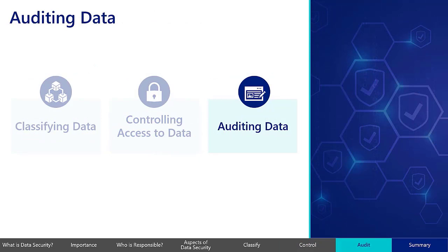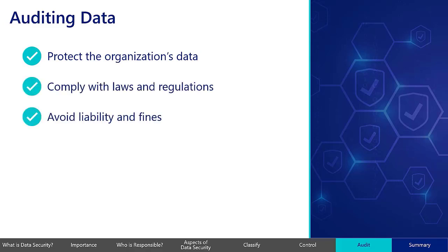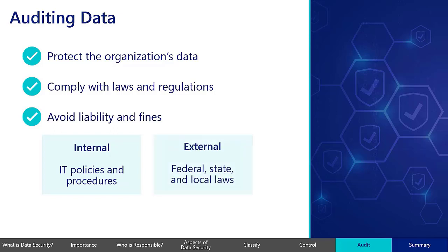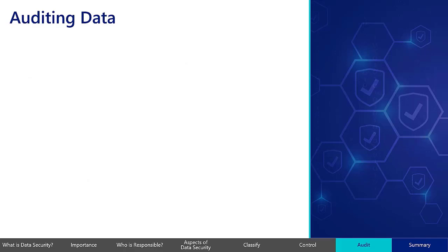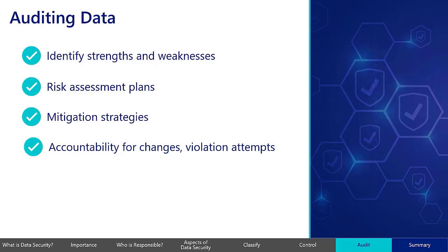The third aspect of data security is auditing data. Regular data security audits ensure the organization is properly protecting its data, complying with laws and regulations, and avoiding liability and fines. Audits typically test against internal and external criteria regulating data security. Internal criteria are defined by the organization's own IT policies and procedures, and external criteria include things like federal, state, and local laws and regulations. By comparing actual practices with relevant standards, data security audits can identify security strengths and weaknesses, and aid in the development of risk assessment plans and mitigation strategies. Finally, audit trails provide for accountability of modifications to information resources and for all changes to automated security and access rules, as well as for violation attempts.